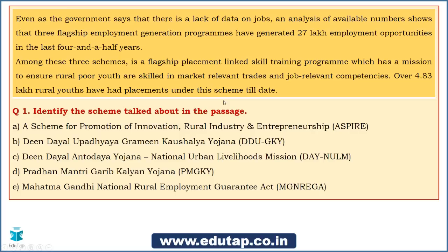Let me tell you the paragraph first. In the previous lecture we were looking at a paragraph; I have taken the same paragraph but modified the scheme. This is going to be an exercise wherein we gradually cover all the schemes. The paragraph reads: 'Even as the government says there is a lack of data on jobs, an analysis of available numbers shows that 3 flagship employment generation programs have generated 27 lakh employment opportunities in the last 4 and a half years.' So this paragraph deals with employment generation programs — start thinking about schemes related to that.